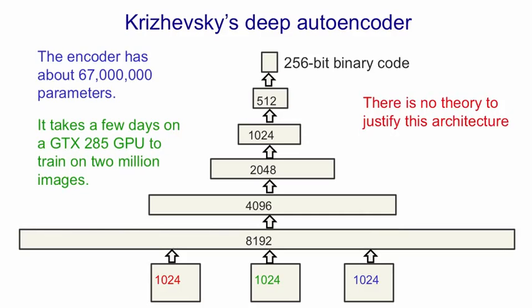This encoder has about 67 million parameters — it's quite big. It takes a few days to train it on an NVIDIA GPU, and Alex trained it on 2 million images. There's absolutely no theory to justify the architecture he used. We know we want a fairly deep net and it makes sense to make it get narrow as we go up, but this particular architecture where you halve the number of units each layer is just a guess. Interestingly, a guess like this already works quite well, and presumably there are some other architectures that will work better.